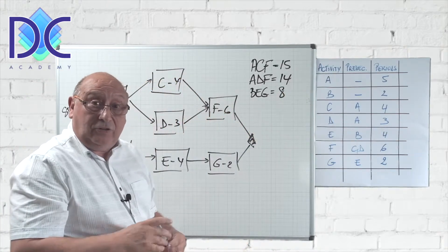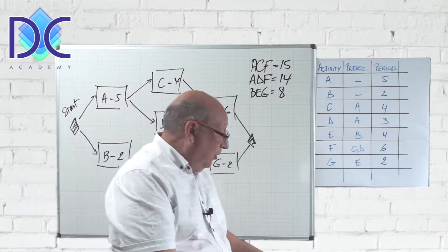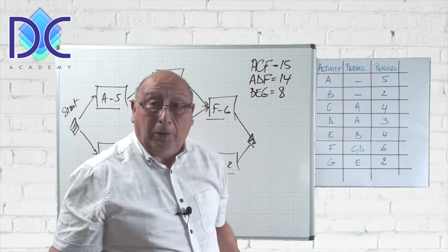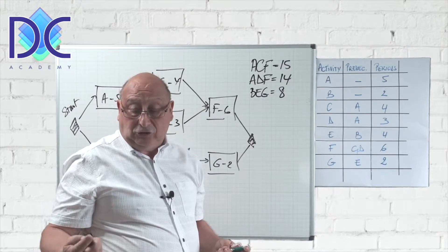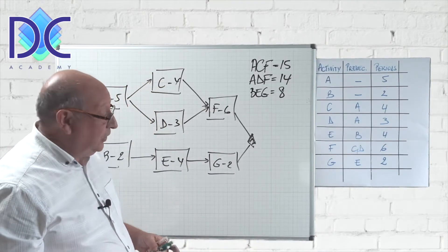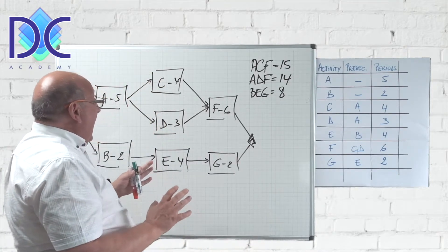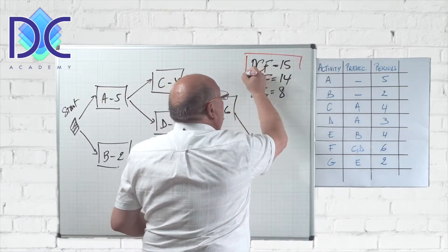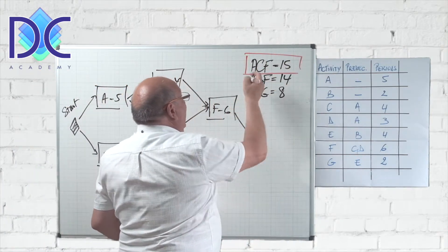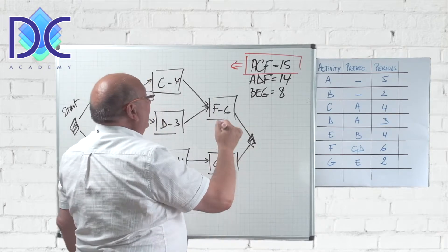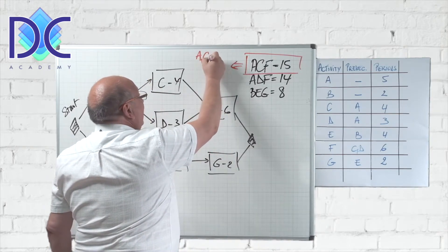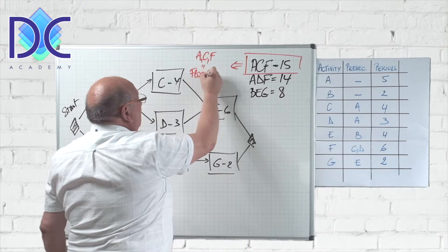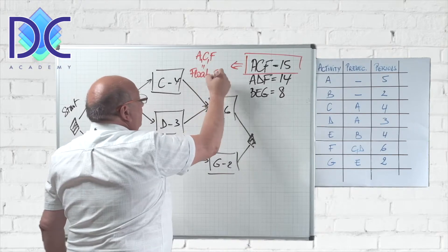Remember the definition of the critical path: it is the longest path through the network. In this case that is A–C–F with a duration of fifteen. Based on this, we know that activities A, C, and F have float equal to zero.